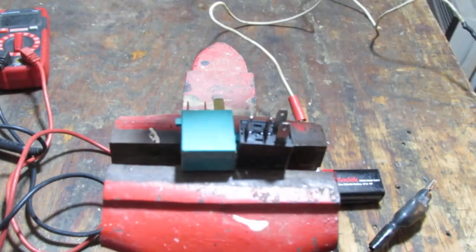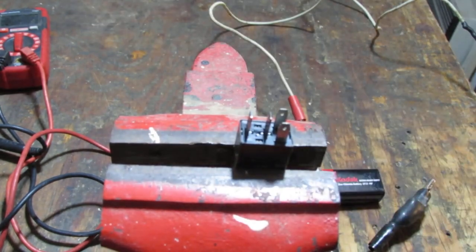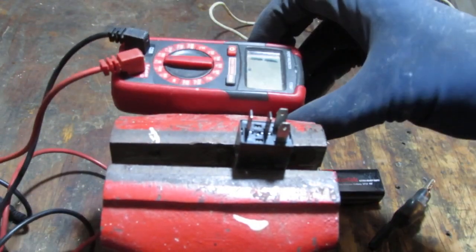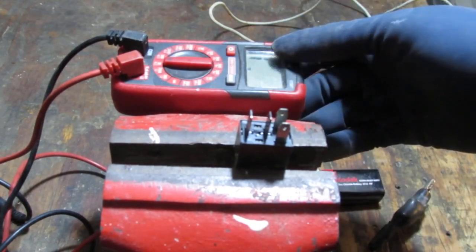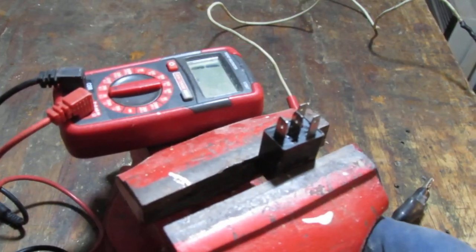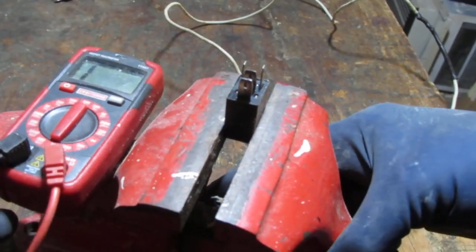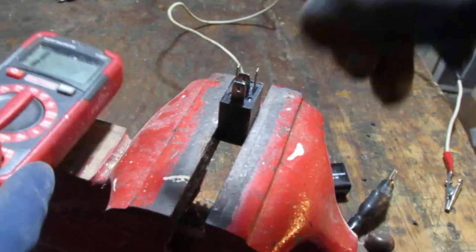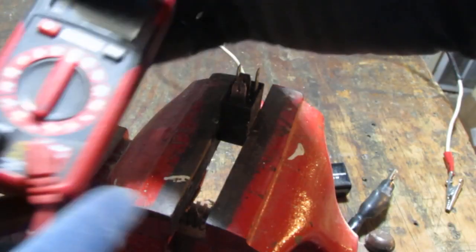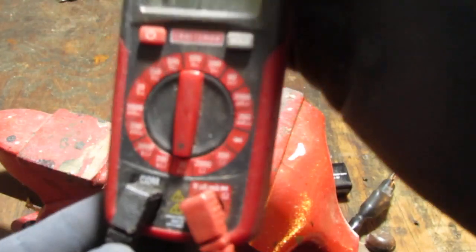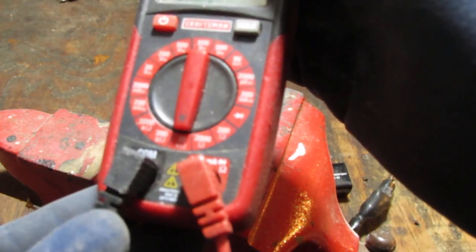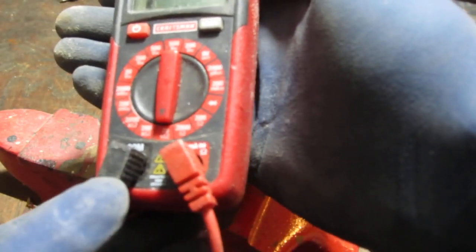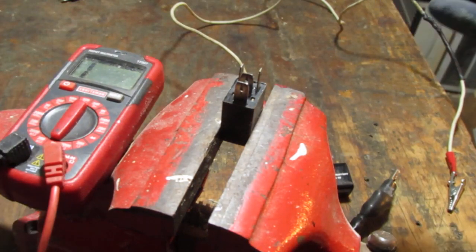So when you test this, you're going to apply power to those two, and you can hear, there's an audio stimuli that you can observe that will give you an idea if this relay is actually functional. All right, so let's start off with that first test. So I'm in 20 kiloohms. That's the lowest setting on this Craftsman multimeter.